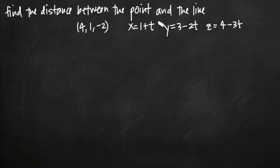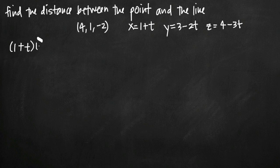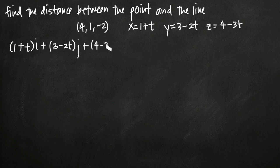We're going to do that by treating each of these parametric equations as the coefficients on a vector that includes i, j, and k. So here's what that looks like. We take the parametric equation for x, which is 1 plus t, and call it the coefficient on our i component. We call 3 minus 2t the coefficient on our j component, and 4 minus 3t the coefficient on k.